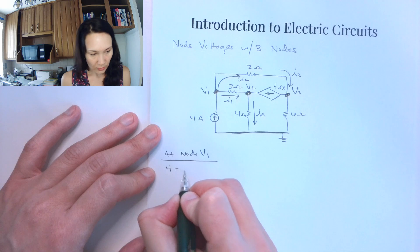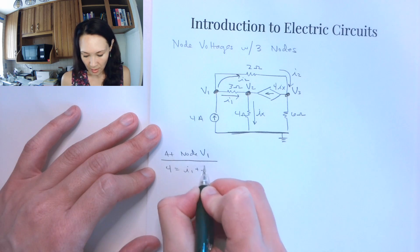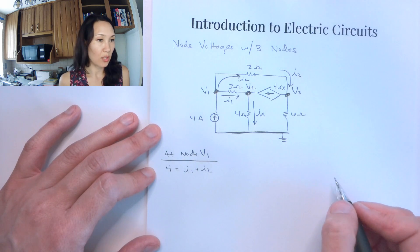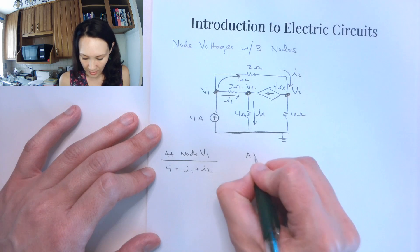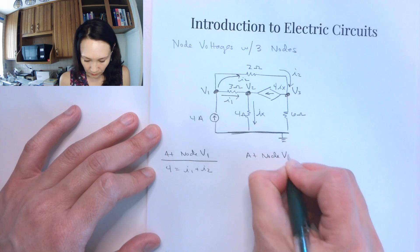So then at this node, the currents we have coming in are 4 amps and the currents we have coming out are I1 plus I2. So 4 is equal to I1 plus I2 is our KCL equation at node V1.